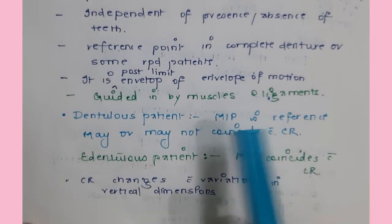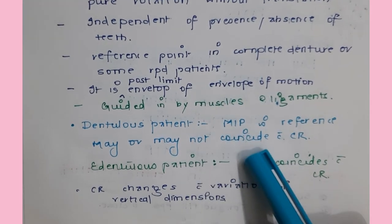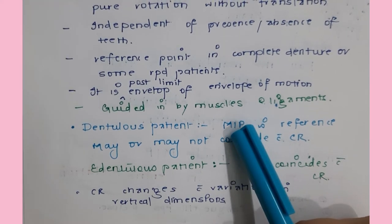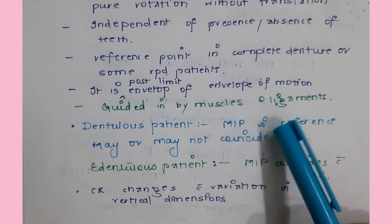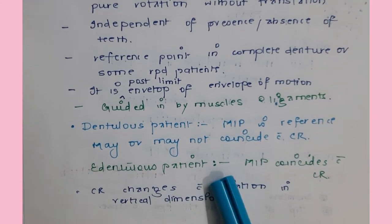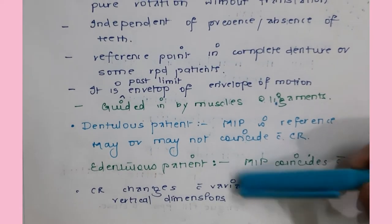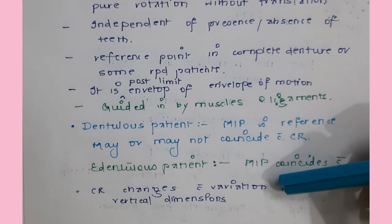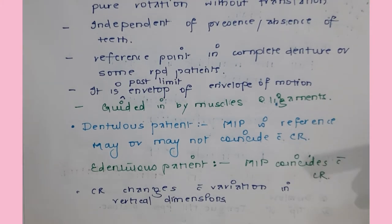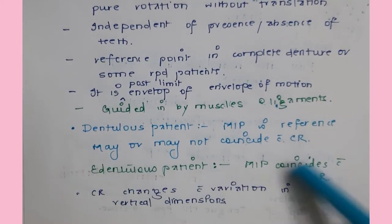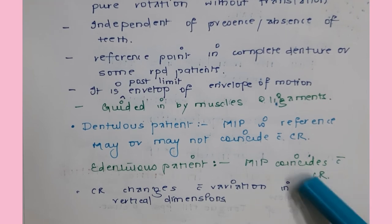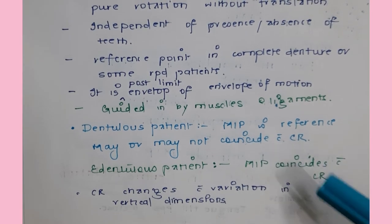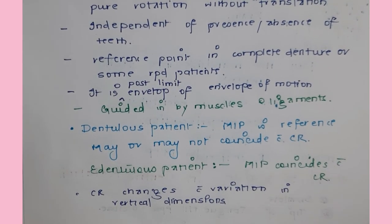In dentulous patients, we take maximum intercuspation as our reference - for a single missing tooth needing a crown, we work in maximum intercuspation. In edentulous patients, we make centric relation coincide with maximum intercuspation. It is only in 10% of the population that centric relation naturally coincides with maximum intercuspation. We record centric relation and set teeth in MIP - these coincide in the edentulous patient. Also, centric relation changes with variations in vertical dimension.